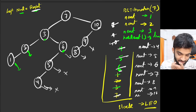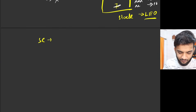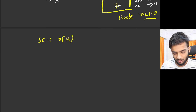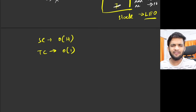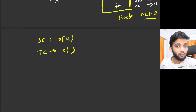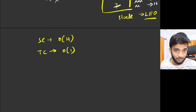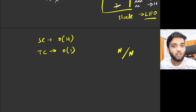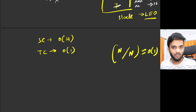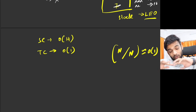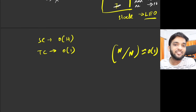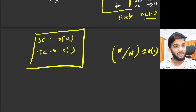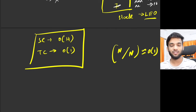The space complexity is O(h) — the height of the tree — because at any instance you're only storing the leftmost path elements, not the entire tree. The time complexity is O(1) on average, not on every single call. There are n elements being pushed in total, and there are n 'next' calls, so n divided by n on average is O(1). That is why we can say the amortized time complexity per call is O(1) and space complexity is O(h).